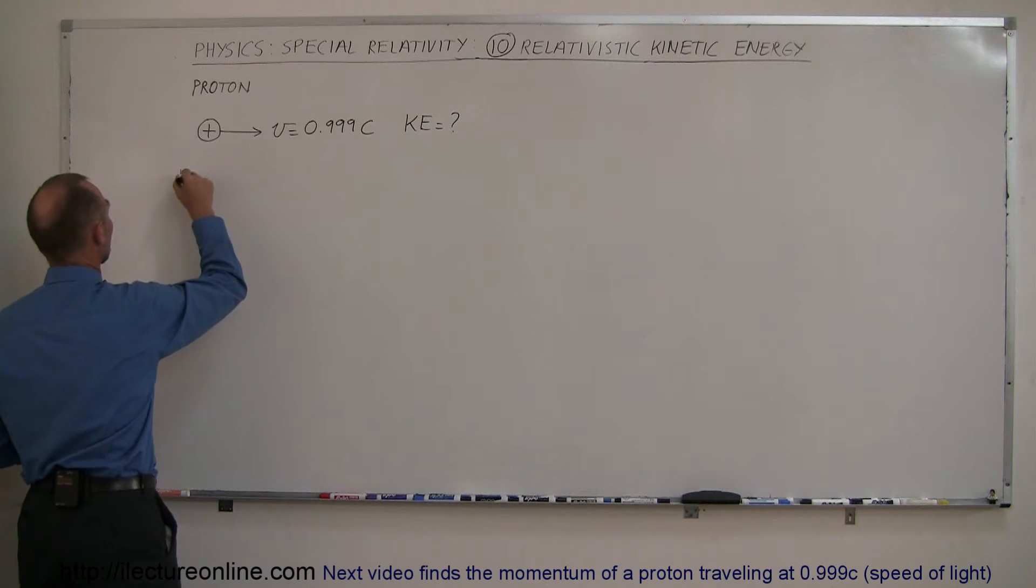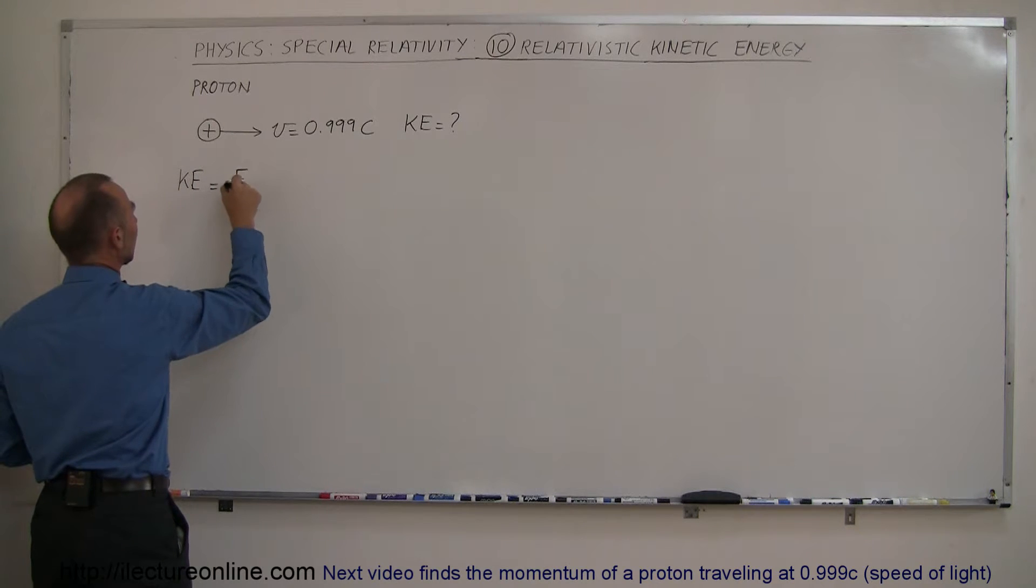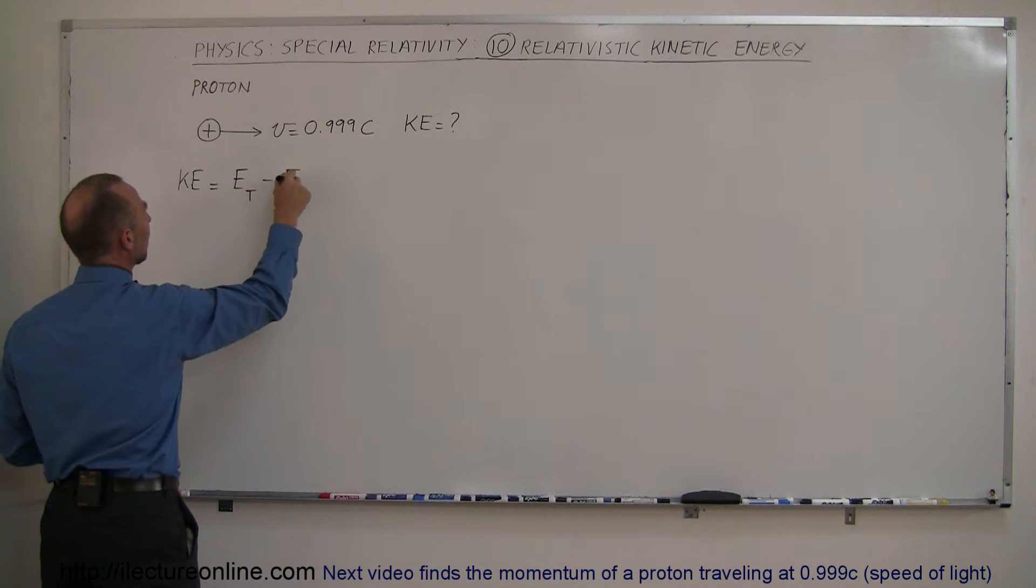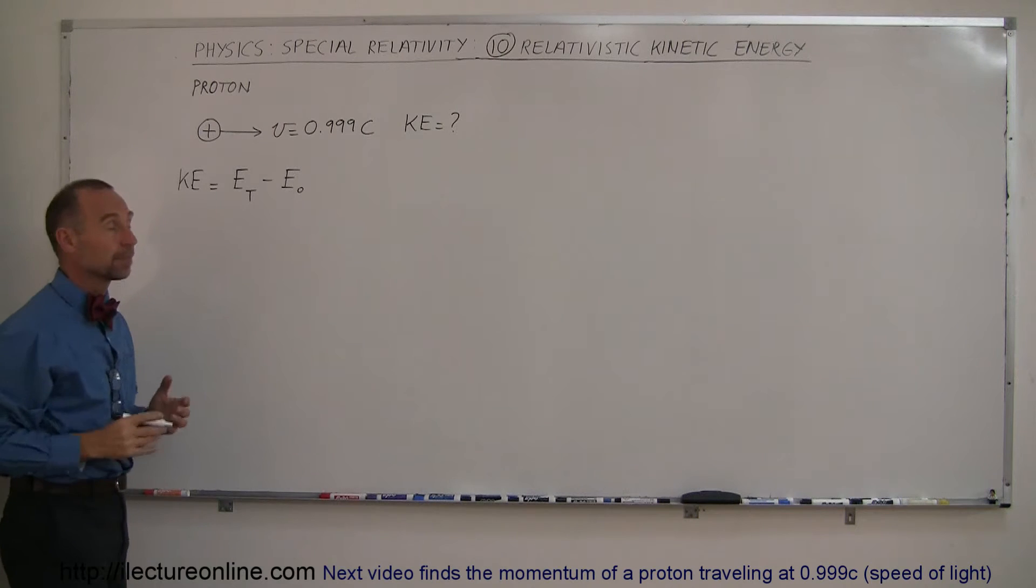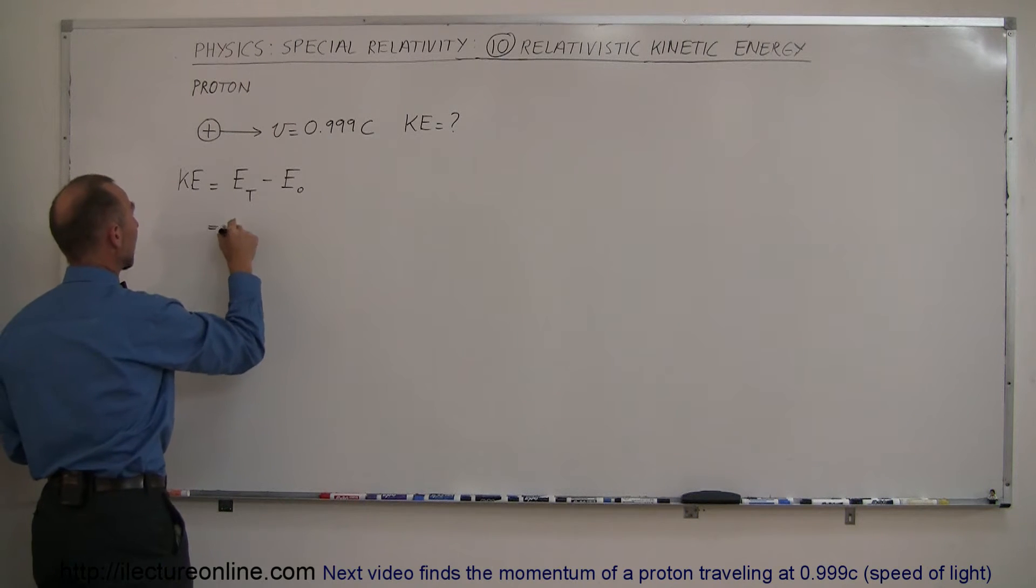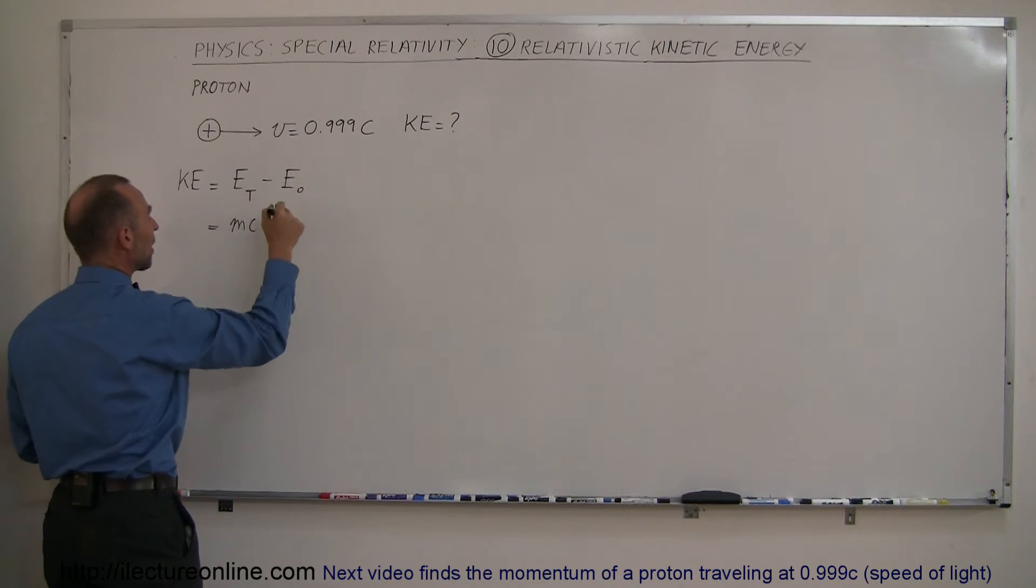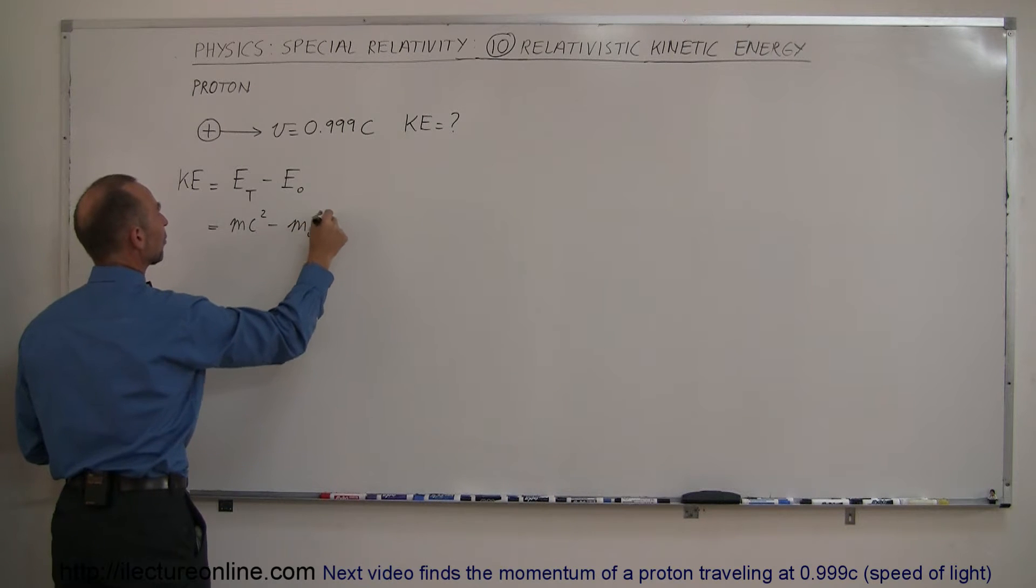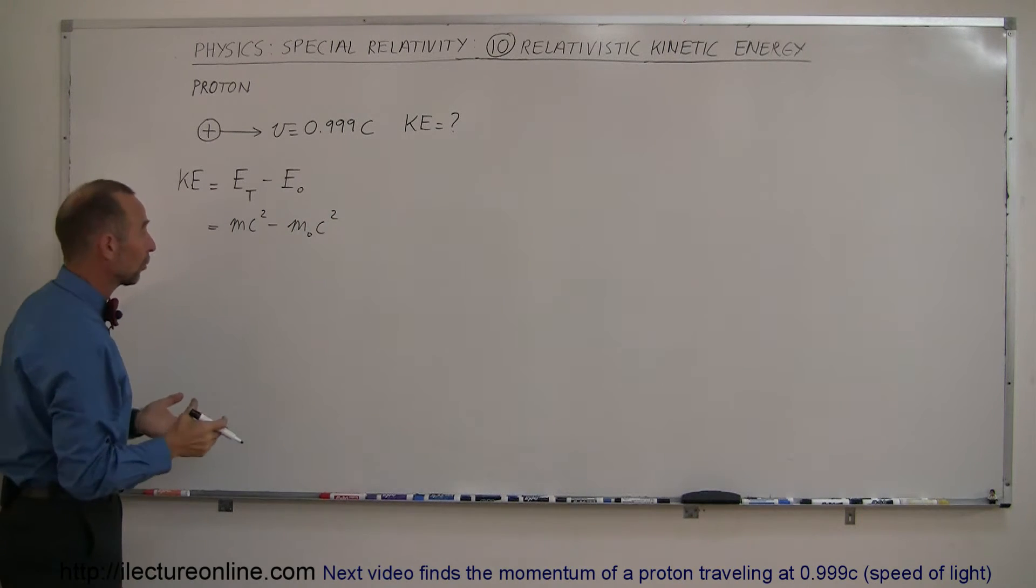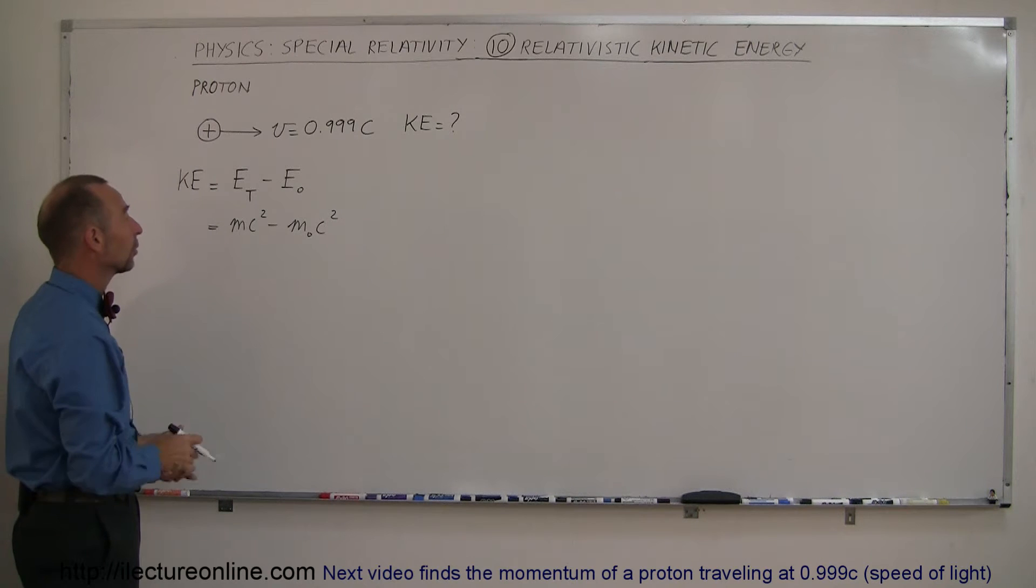Well, kinetic energy for relativistic velocities is equal to the difference between the total energy of a particle minus the rest mass energy of a particle. And the total energy of a particle is equal to mc squared, while the rest mass energy is m sub-naught c squared. Rest mass energy means the energy it has when it's at rest, when the mass is simply equal to the mass of the object at rest.